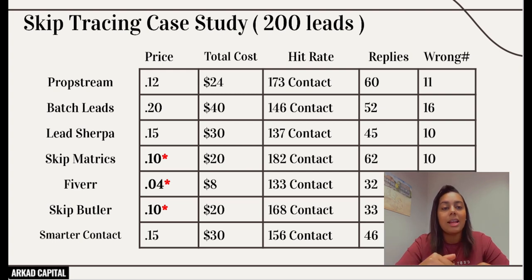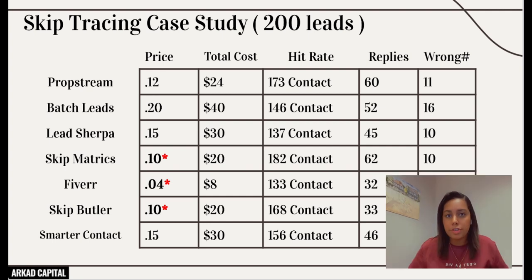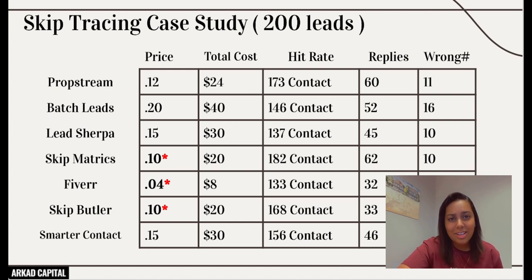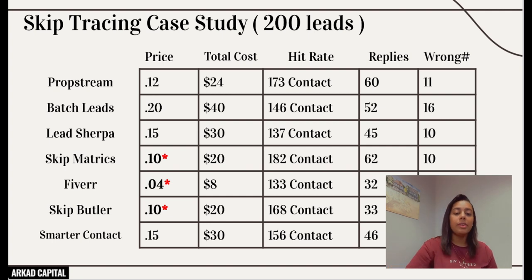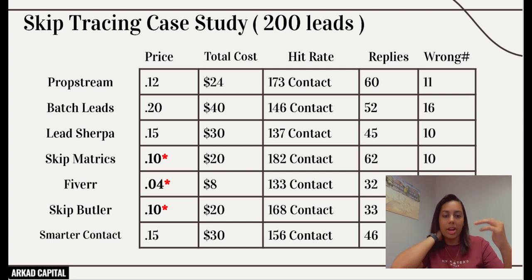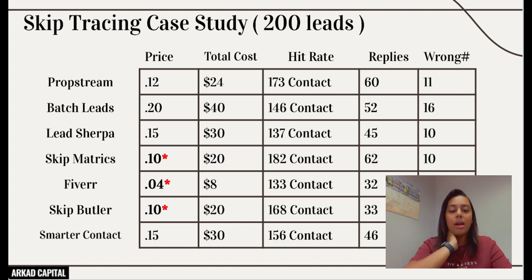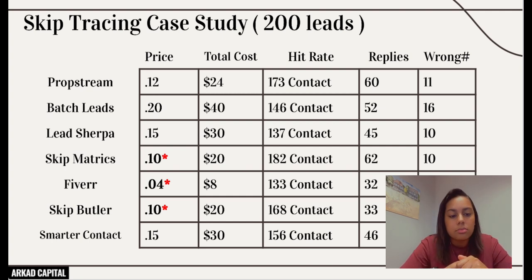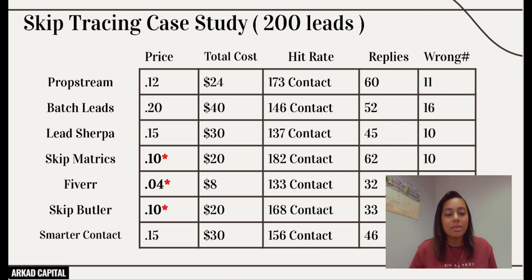Fiverr also doesn't give results instantly — it takes 24 to 48 hours. But for the price, it's not bad at all. Batch Leads cost $40 for 200 leads; Fiverr cost about $8, and Batch Leads actually had more wrong numbers. So in ranking: Skip Matrix is number one (wait 3–4 days), PropStream is number two. For starting out, Fiverr at that price is hard to beat.